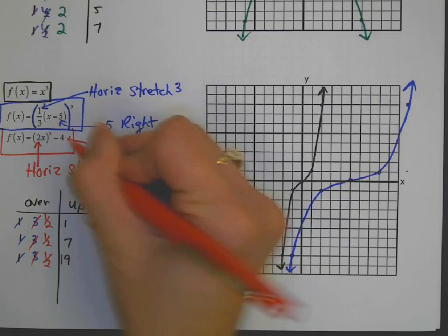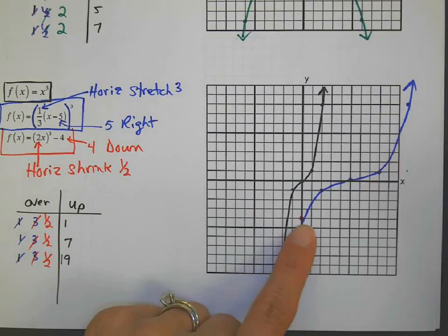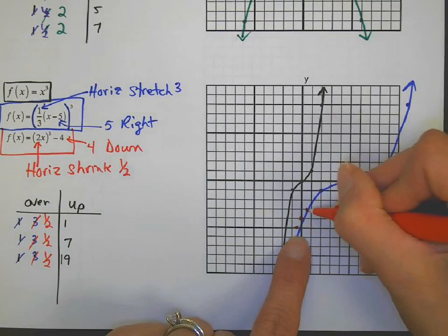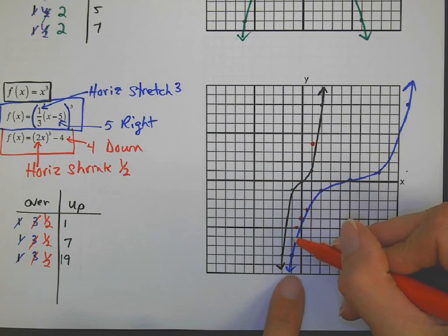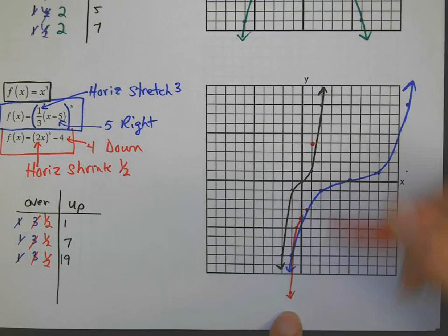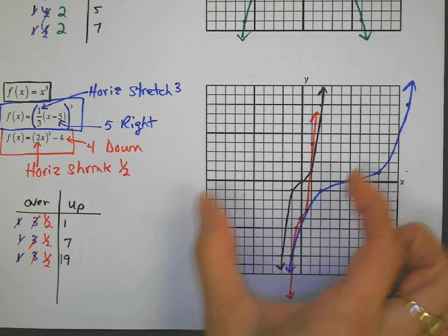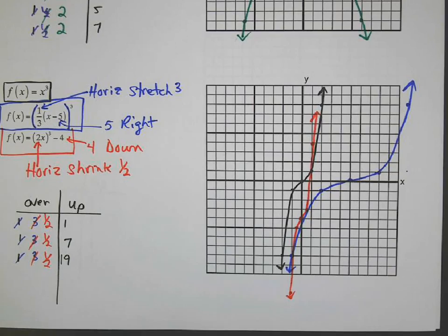Oh, we also have to go four units down, so we'll start our cubic four down here, and we'll go over a half, up and down one. Over a half, up seven. This one is super skinny. Super duper skinny. If I horizontally shrink this curve, it's going to get very thin. He loses a lot of his curve. Okay. Let's move on to absolute value.